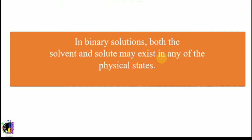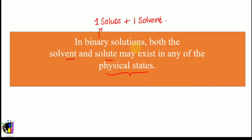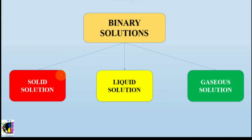In binary solutions, both the solvent and solute may exist in any of the physical states. In a binary solution you have one solute and one solvent. The combination can be anything — solute can be in liquid state and solvent in gaseous state, or both in liquid state. This binary solution is divided into three types: solid solution, liquid solution, and gaseous solution.